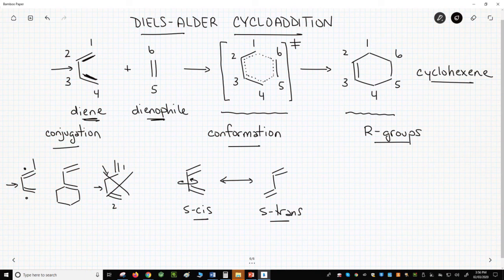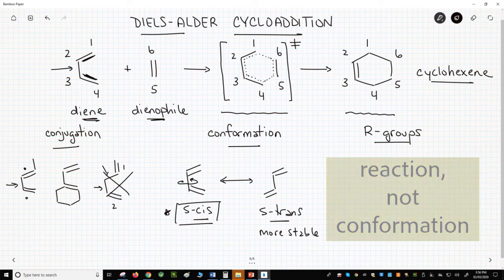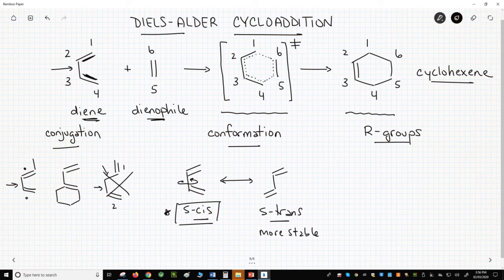These conformations interconvert by rotation about the single bond in the middle. The S-trans conformation is more stable, but the S-cis is the one that does the Diels-Alder reaction. Therefore, in order to do a Diels-Alder, the diene must be able to access the less stable S-cis conformation.